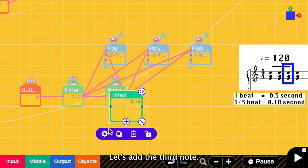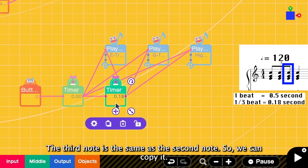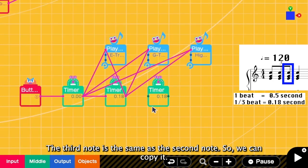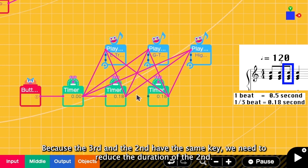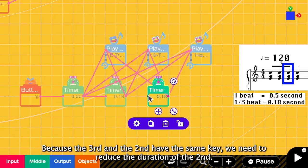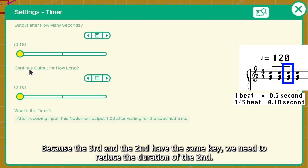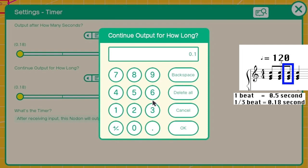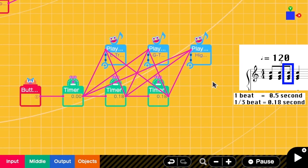Let's add the third note. The third note has the same keys and the same beat as the second one. So we can copy the second one and then we connect it to the same keys. But because these two have the same keys, we have to go to the second timer settings and then reduce the duration to be 0.16. So now it will be. Yay, that's our first three.